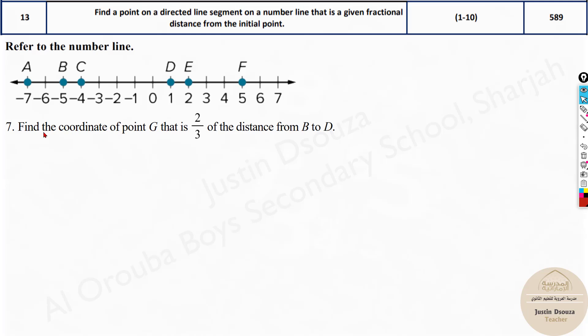Now over here we have the same concept but just the number line is different. We need to find the point G from B to D. This is x₁, D is x₂. The formula remains the same. The fraction is given, fractional distance, so a by b is over here. Just put this in the formula and solve it up.